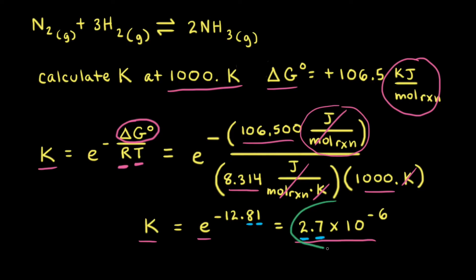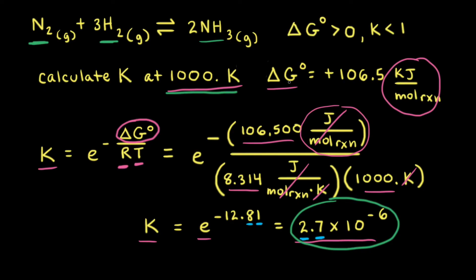For this example, K is much less than one, which tells us at equilibrium there are far more reactants than products. At 1000 Kelvin, this reaction at equilibrium would have a lot more of the reactants nitrogen and hydrogen, and only a small amount of the product ammonia. So whenever delta G naught is positive, or delta G naught is greater than zero, the equilibrium constant K is less than one, meaning there are more reactants than products at equilibrium.